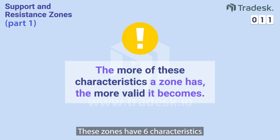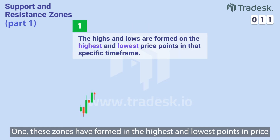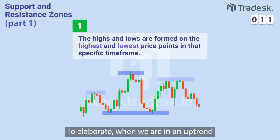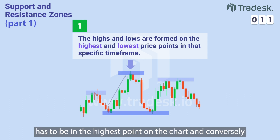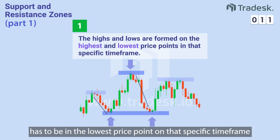These zones have 6 characteristics, and the more of these characteristics a zone has, the more valid it becomes. 1. These zones have formed at the highest and lowest points in price. To elaborate, when we are in an uptrend, the price's contact with the Resistance Zone has to be at the highest point on the chart. And conversely, in a downtrend, the price's contact with the Support Zone has to be at the lowest price point on that specific time frame.